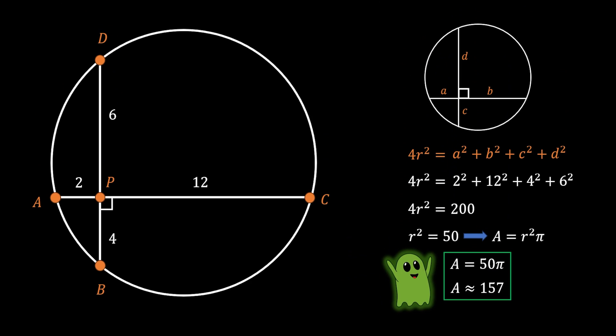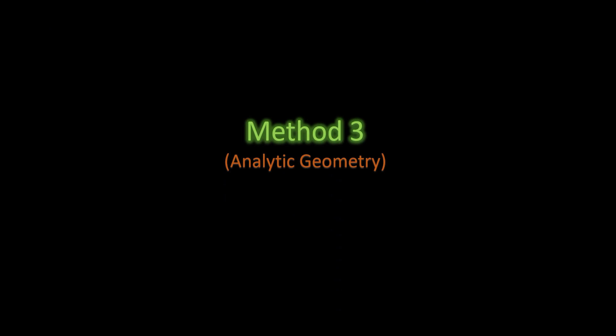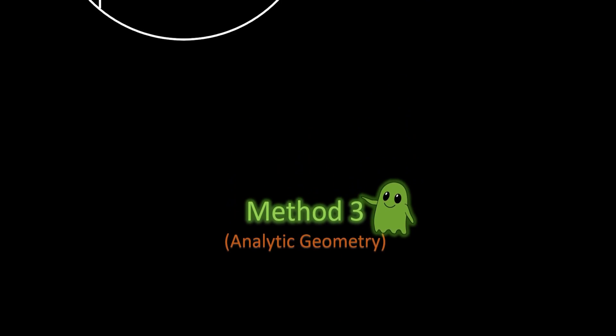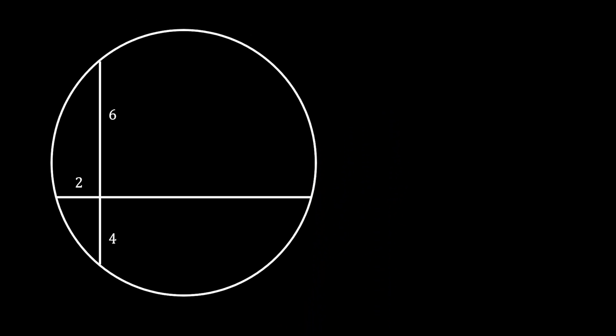Now let's do method number 3 — by far my favorite one — the analytic geometry method. For this method, we first need to set our X and Y axes, overlapping with our chords and intersecting at the intersection point of the two chords. We continue by setting intersection point A at the bottom with coordinates (0, −4), and intersection point B with coordinates (0, 6). On the left, intersection point C has coordinates (−2, 0).